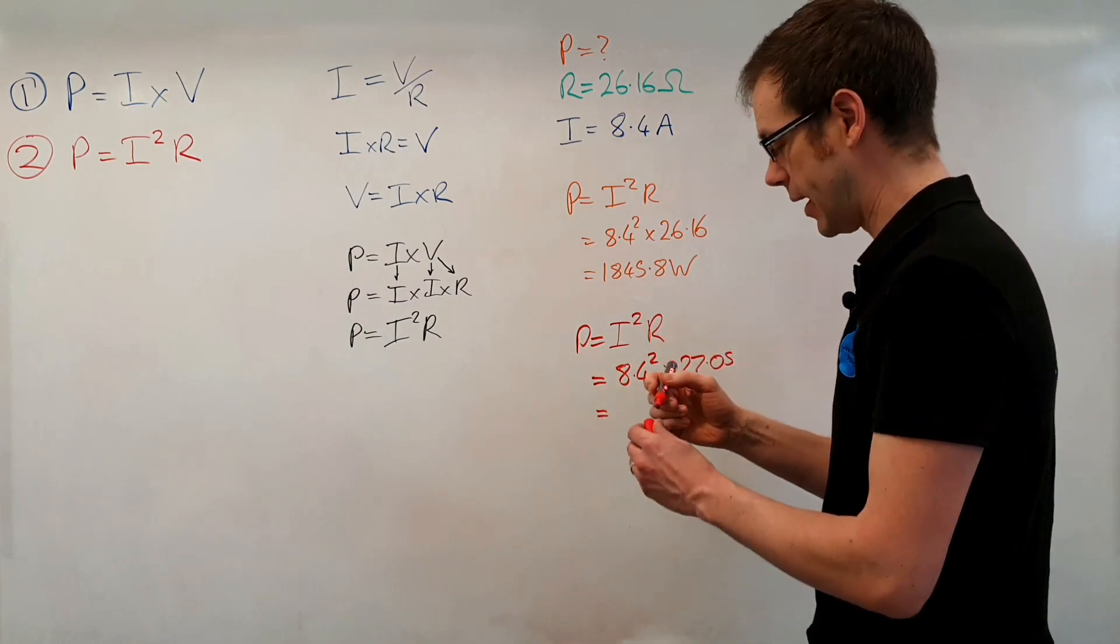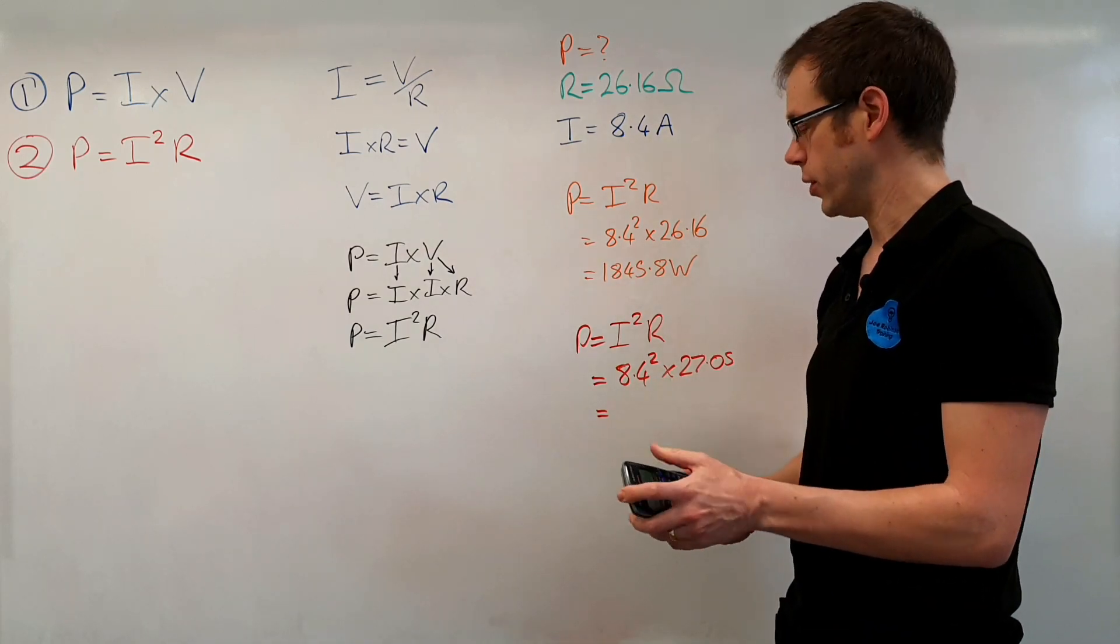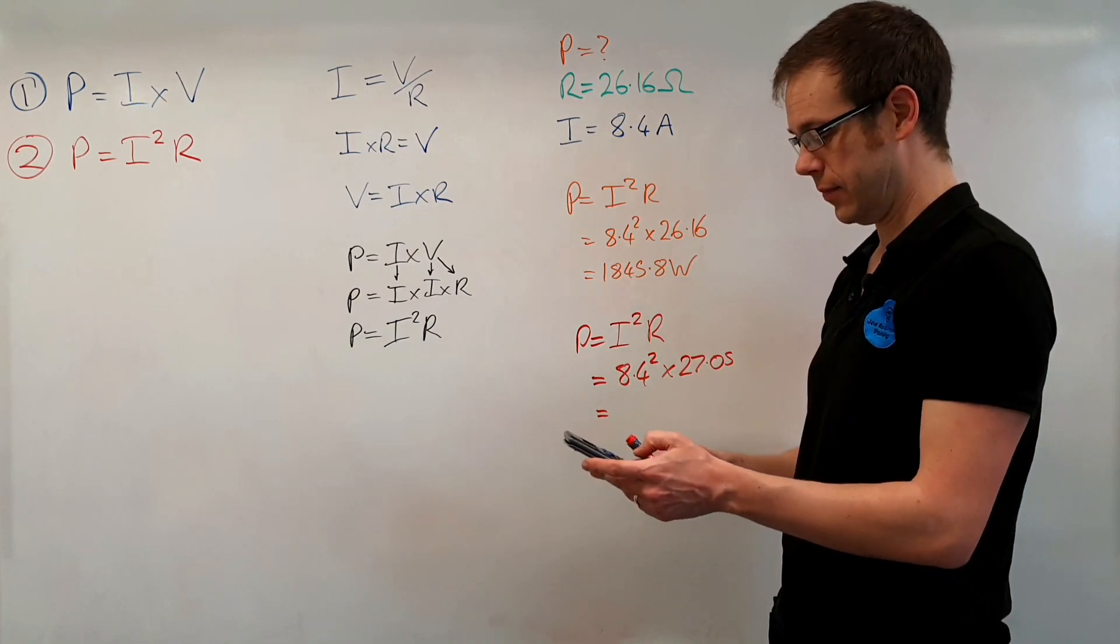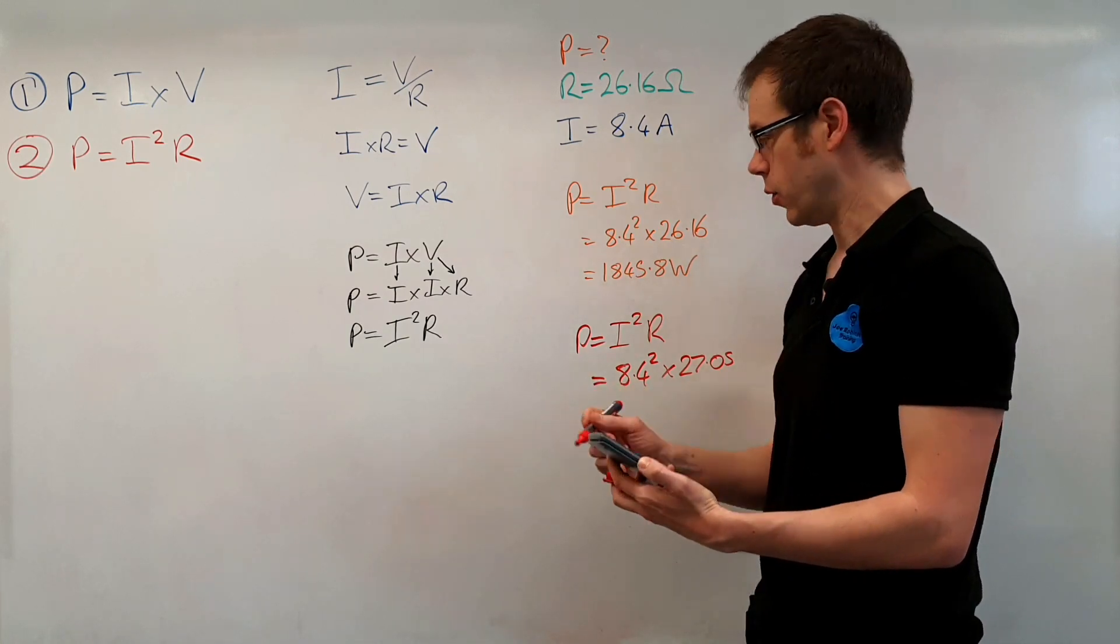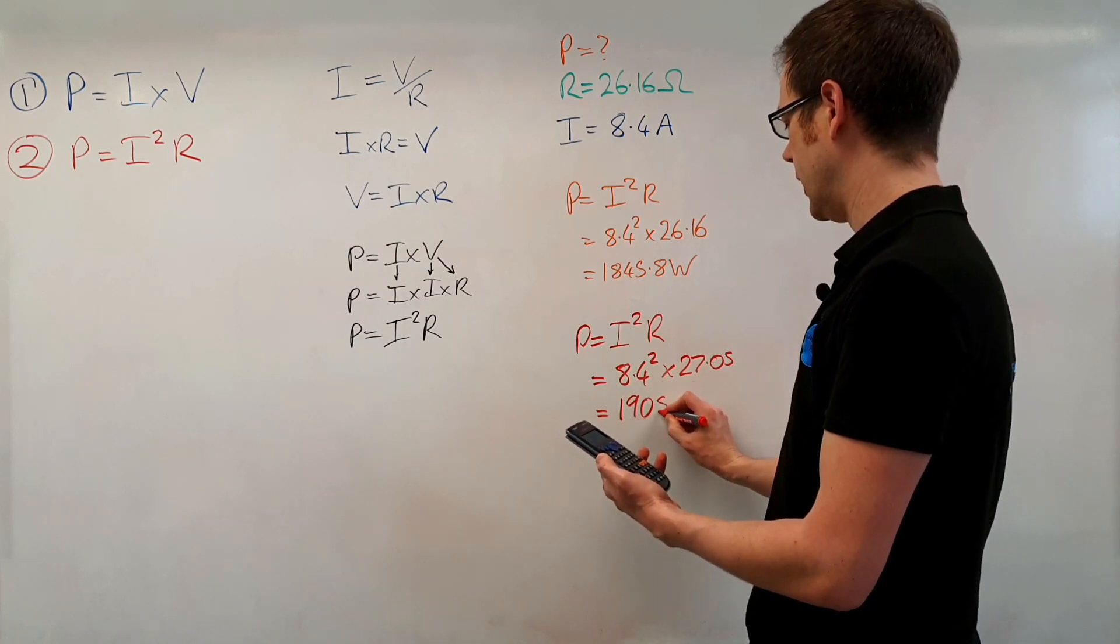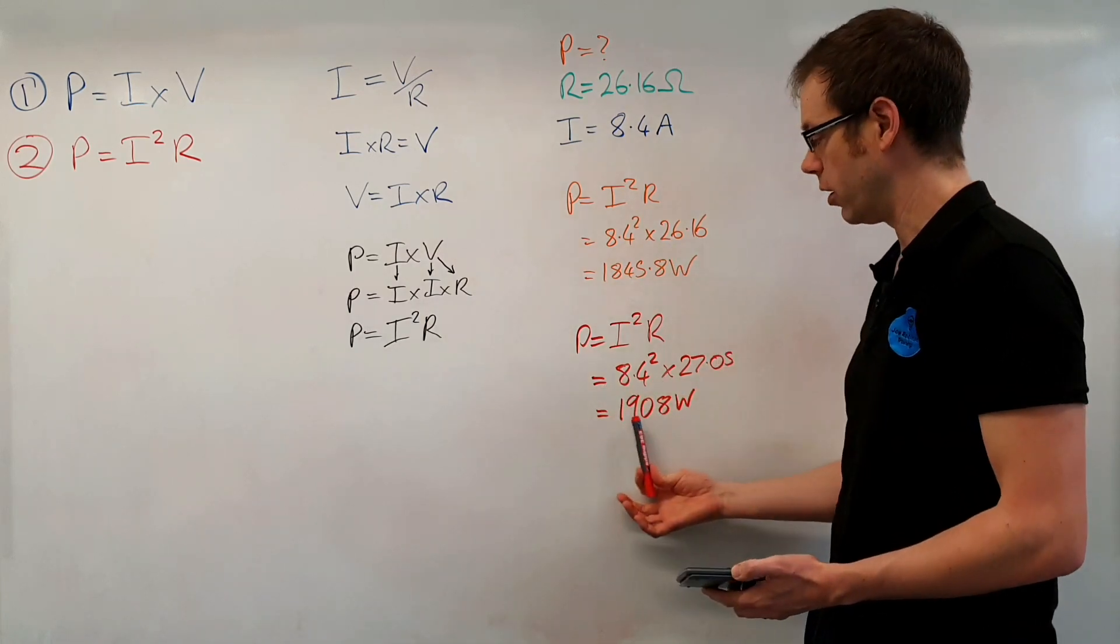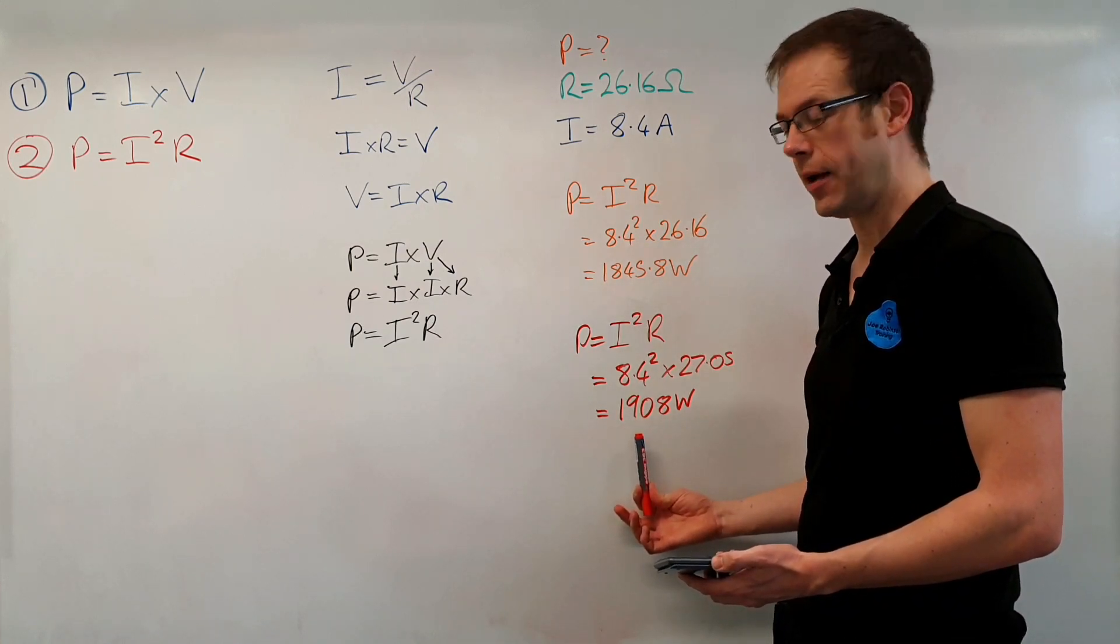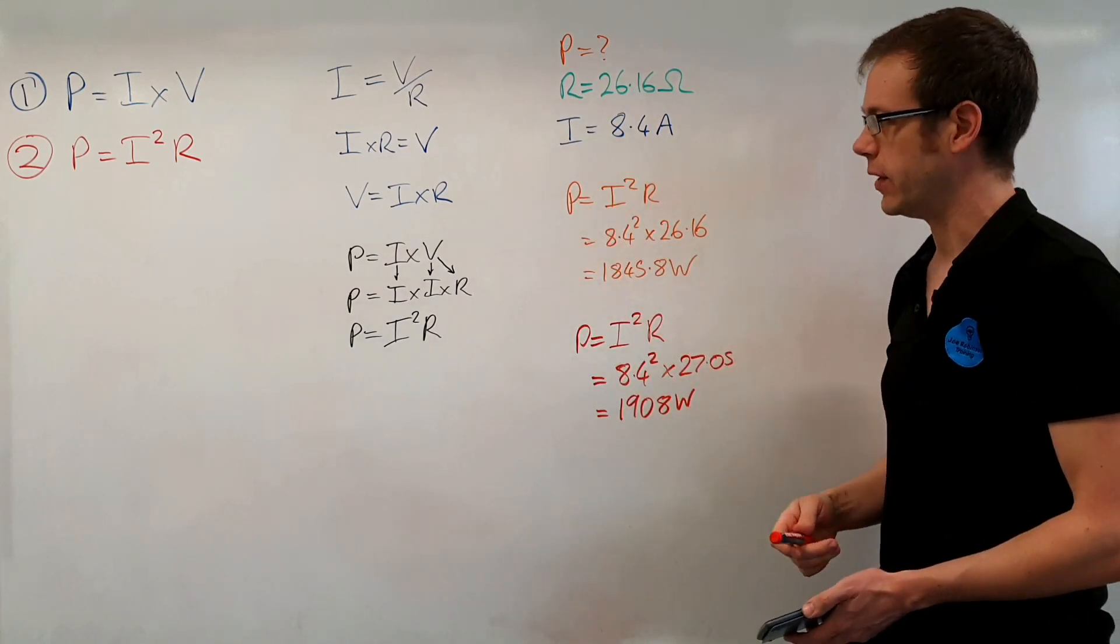So let's put that into the calculator and see what we come out with. 8.4 squared times by 27.05 so we've got 8.4 squared times by 27.05 and that is now coming out at 1,908 watts. 1,908 watts. So that's a slightly more realistic value and again we're getting even closer to that 2 kilowatt value that we know our heater is rated at and the slightly higher than 2 kilowatt value that we calculated in the previous video.